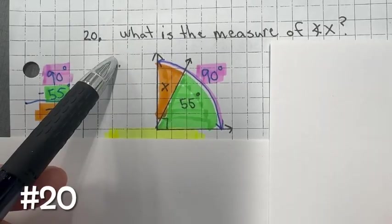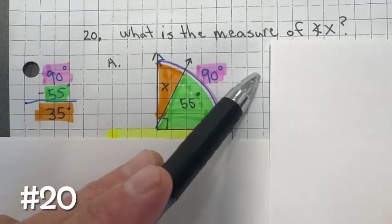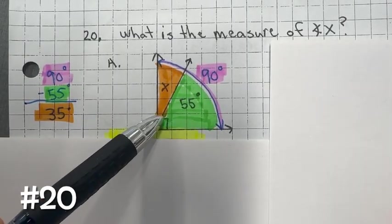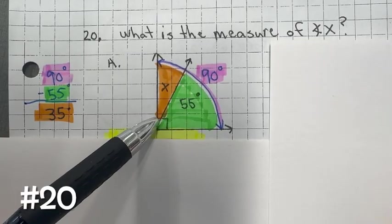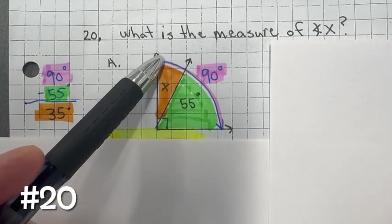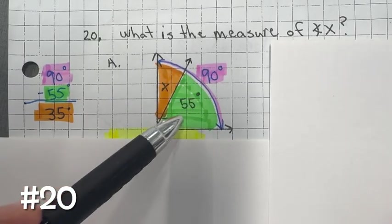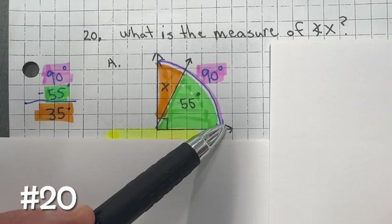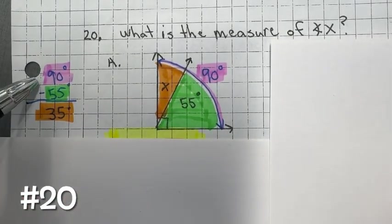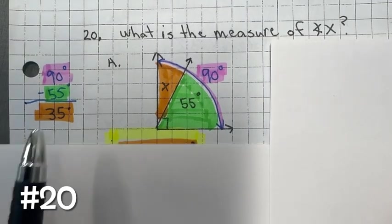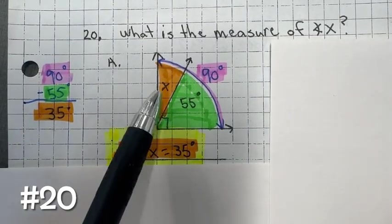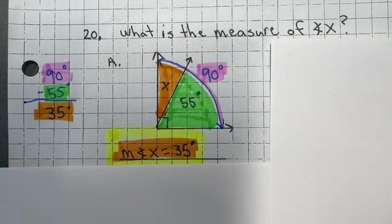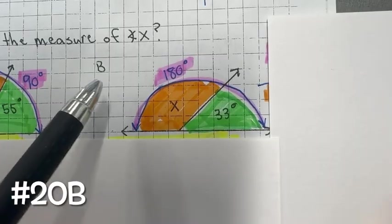For number 20, find the measure of angle x. The angle shown has a 90-degree symbol, so the sum of the two angles equals 90. Subtract 55 from 90: 90 minus 55 is 35. So the measure of angle x equals 35 degrees. Check: 35 plus 55 does equal 90 degrees.